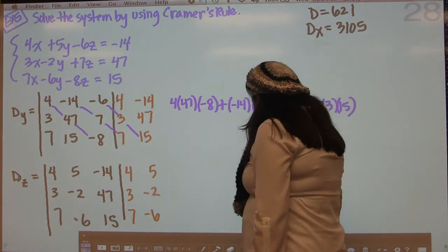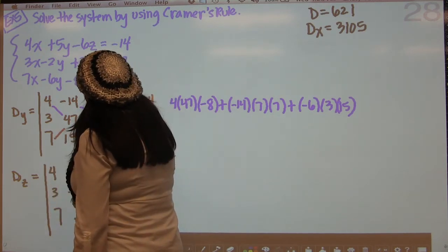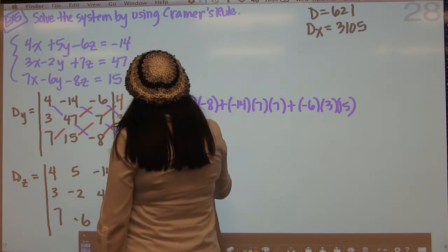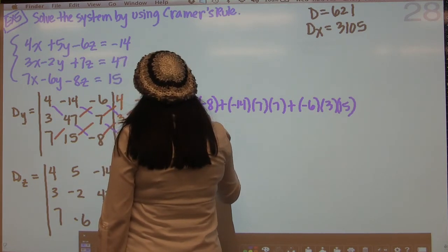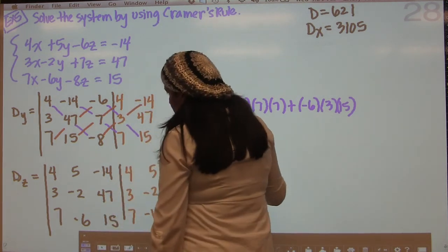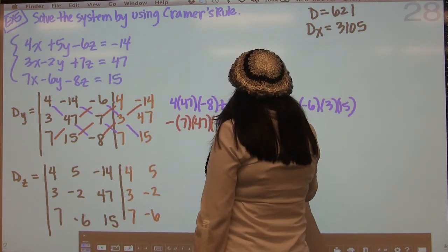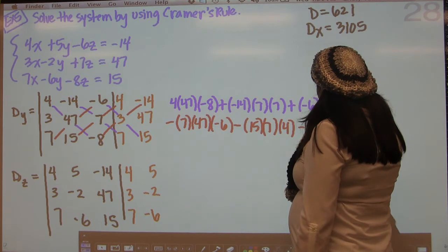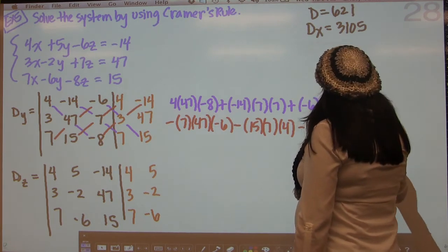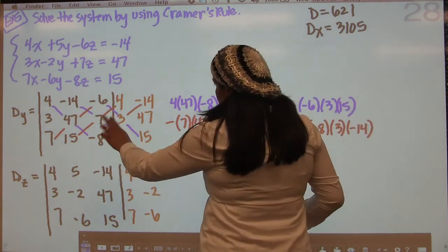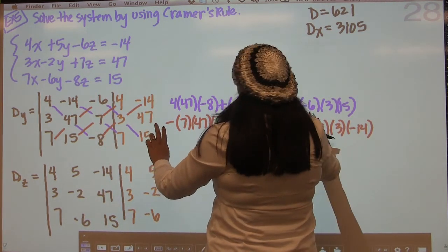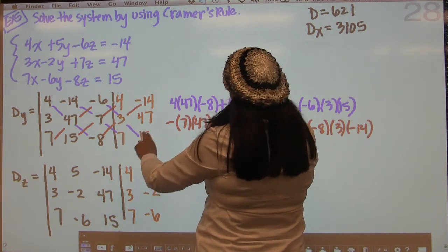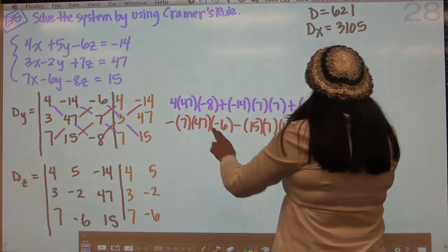And then going in the other direction: minus 7 times 47 times negative 6, minus 15 times 7 times 4, and negative 8 times 3 times negative 14. Just want to check again: 4, 47, negative 8; negative 14, 7, 7; negative 6, 3, 15; negative 7, 47, negative 6; 15, 7, 4; negative 8, 3, negative 14. Perfect.